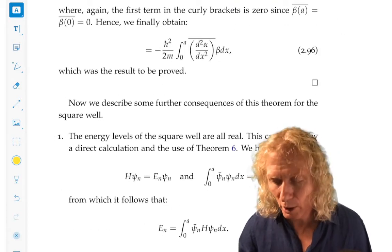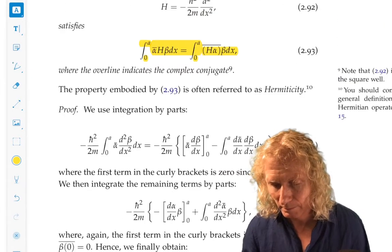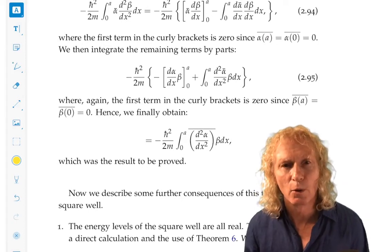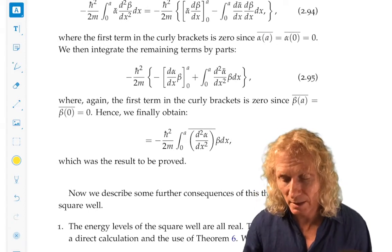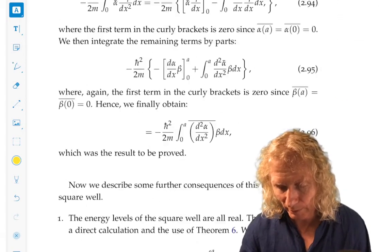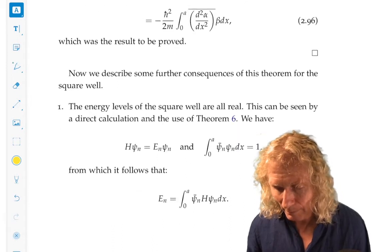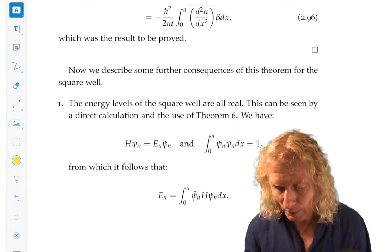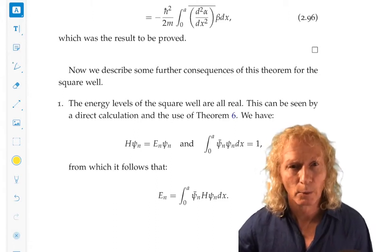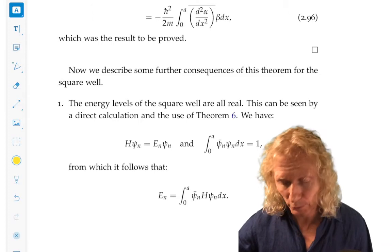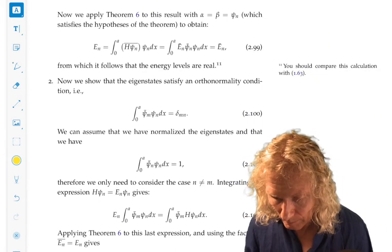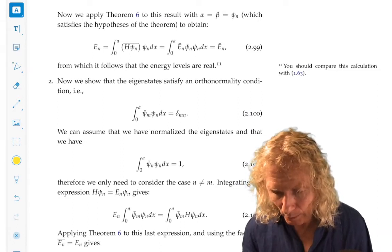So this hermeticity result, theorem six, self-adjoint. If we know that h of this form is self-adjoint in this sense, although we're just using this property we haven't referred to as anything, it's easy to prove then that the eigenvalues are real, energy levels are real, and they are orthogonal.